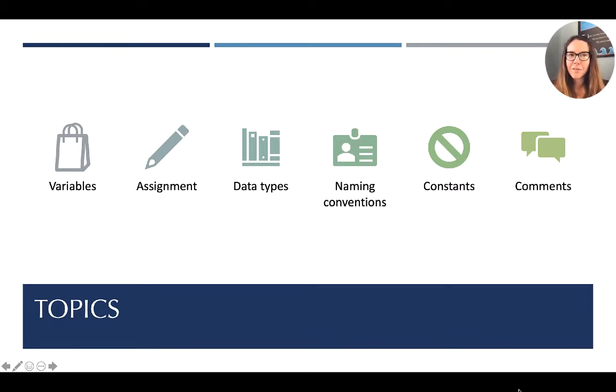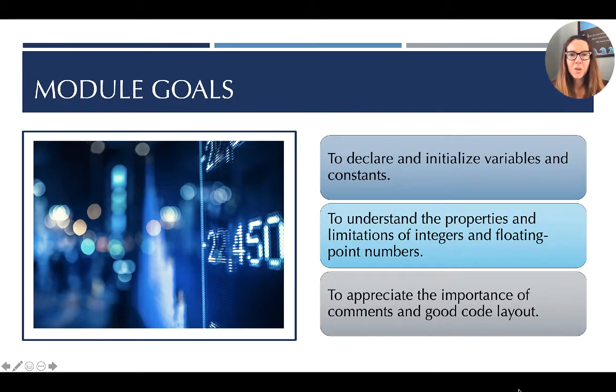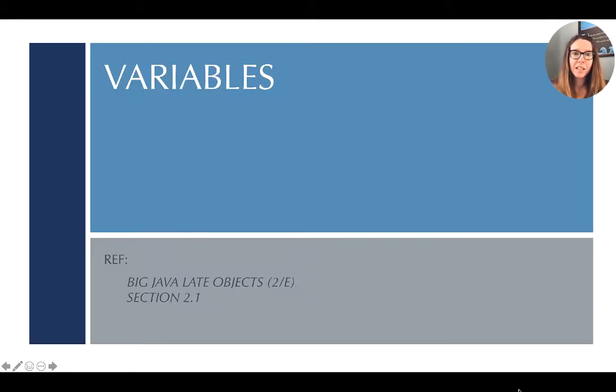We'll look at those things that never change that are constant, and we'll also look at information that we'd like to leave behind for humans that read our code called comments. If you're following along in the book, we're using Big Java Late Objects, and this would be found in section 2.1.